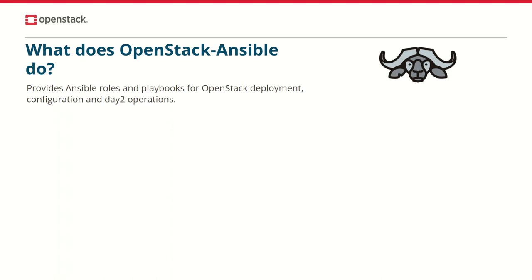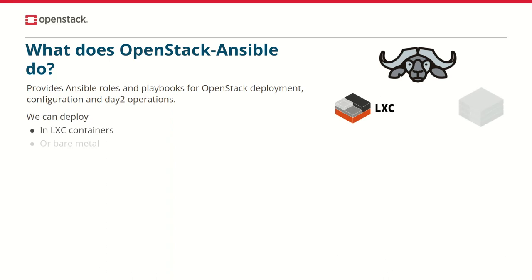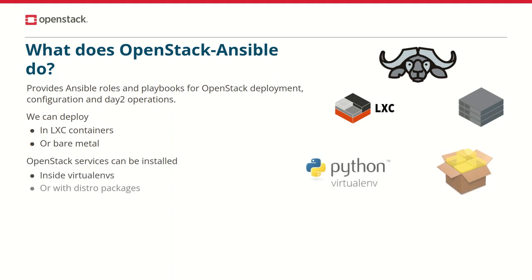OpenStack Ansible gives you some options about how to deploy OpenStack. Originally we started with deployment inside LXC containers, but since then we also support bare-metal deployments with no containers. OpenStack services can be built from source and installed with pip inside virtualenvs, which is the preferred and most reliable way, but they also can be installed with distro packages. We support and test a pretty wide selection of distros as well.